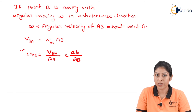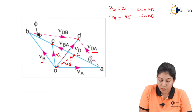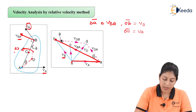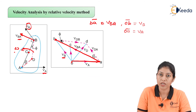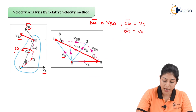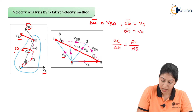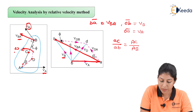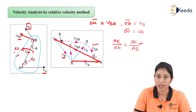One key point to remember: point C must be marked on the velocity diagram with the same ratio as it divides link AB. The ratio is: ac by ab (velocity diagram) equals capital AC by capital AB (actual link diagram). The small letters refer to the velocity diagram and the capital letters refer to the actual link diagram. This is all about the relative velocity method. Thank you so much.